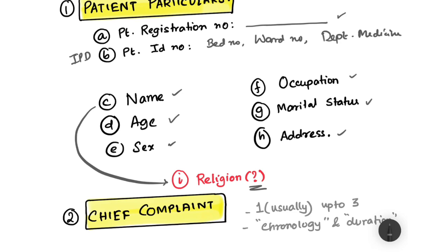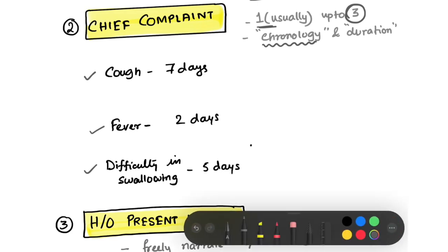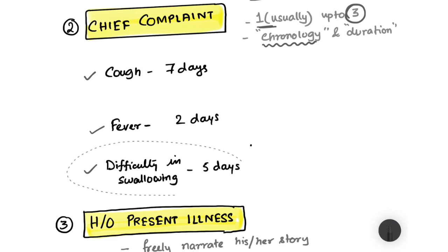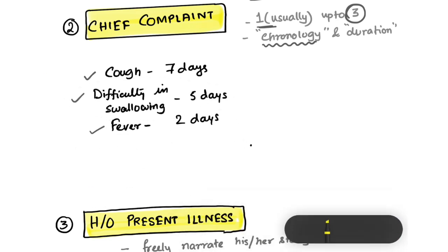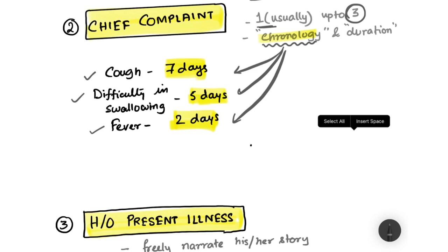Now we come to the chief complaint — the main complaint with which the patient has presented. When writing the chief complaint, write ideally one complaint, up to a maximum of three, and write them in chronological order with duration. For example, if a patient has cough for seven days, difficulty in swallowing for five days, and fever for two days, you write them in that chronological order: seven days, five days, two days. Always maintain chronology and duration — this is of paramount importance.